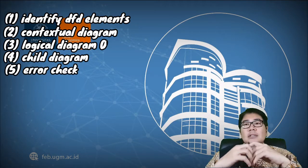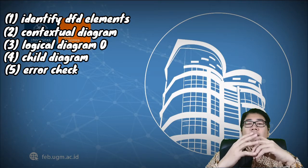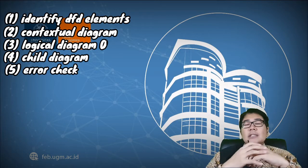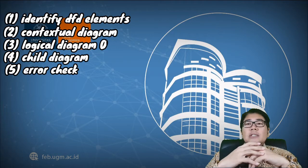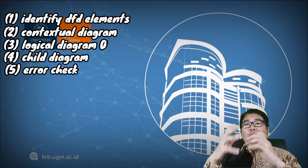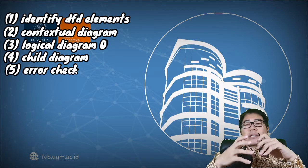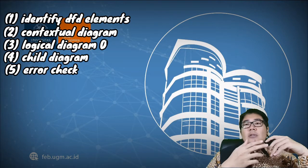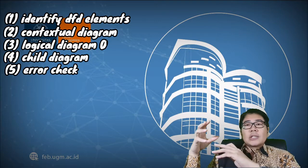The fifth step is to do some error checking to ensure that there are no errors on the data flow diagram. The general rule for drawing a data flow diagram is that you need to join the sequence: input, process, and output. It can also be input, process one, process two, process three, and then output. But it always has to have input, process, and output. It cannot go with input then output directly, or a process without input, or a process without output. The input should come from an entity or data store, and the output should be sent to an entity or another data store.